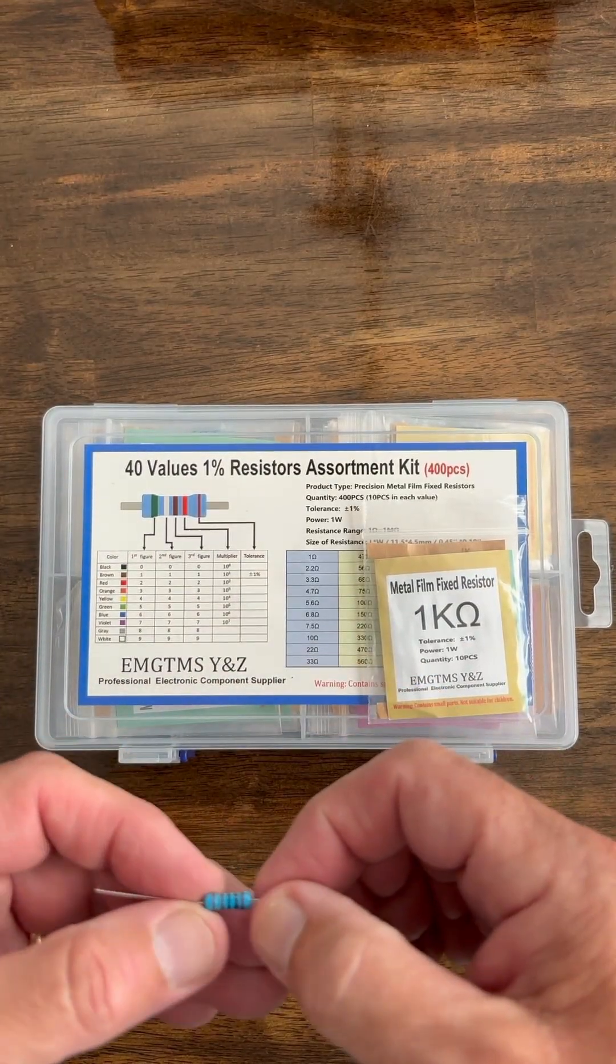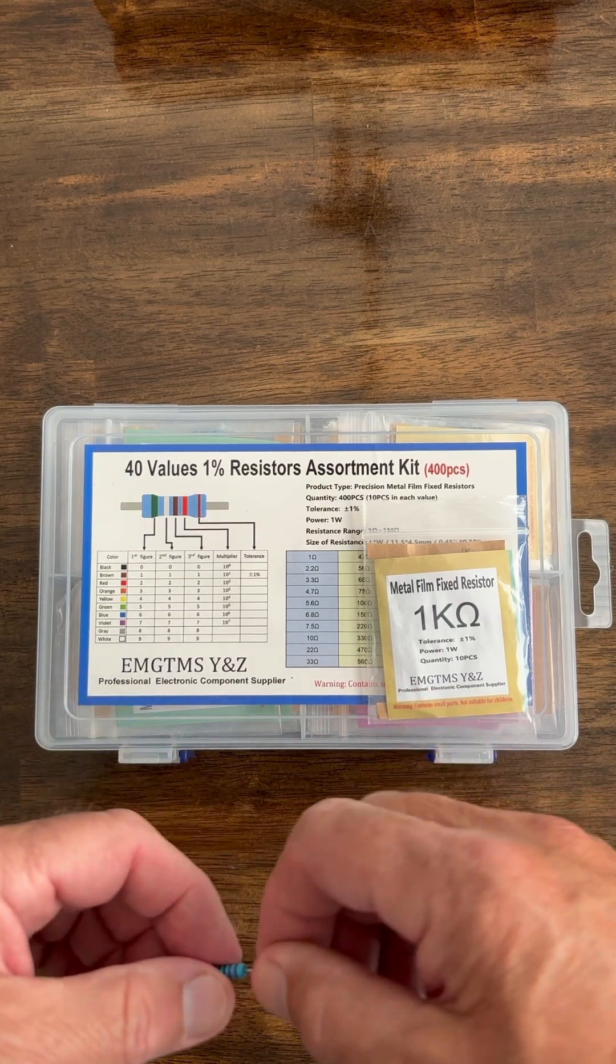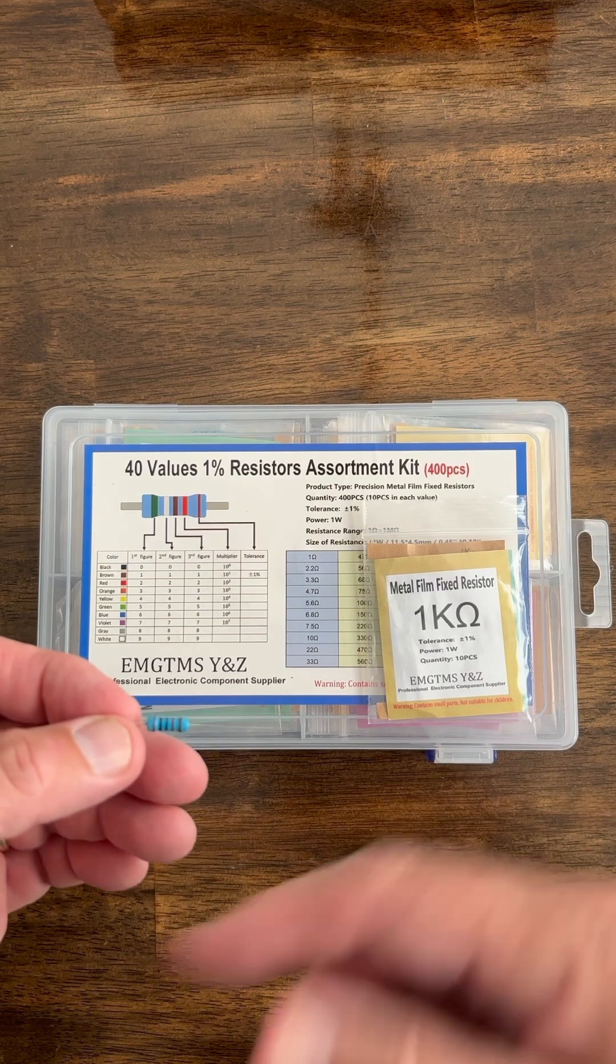It is marked brown black black brown with a purple tolerance band, so that corresponds to a 1k, so it's properly marked 1k ohm resistor.